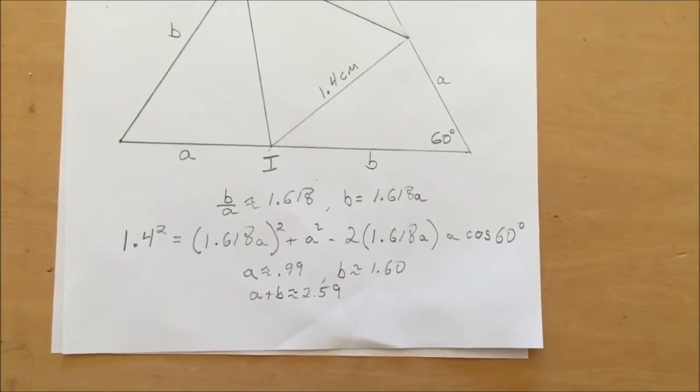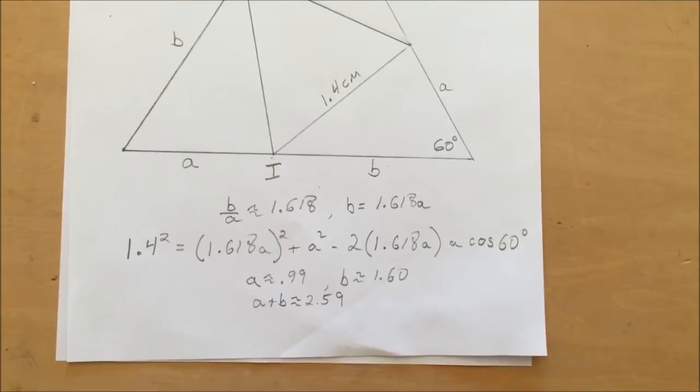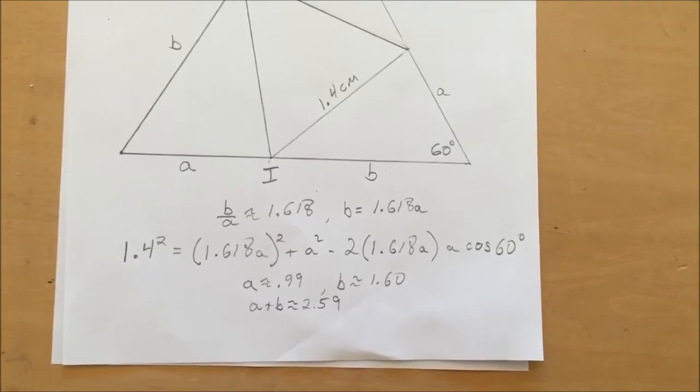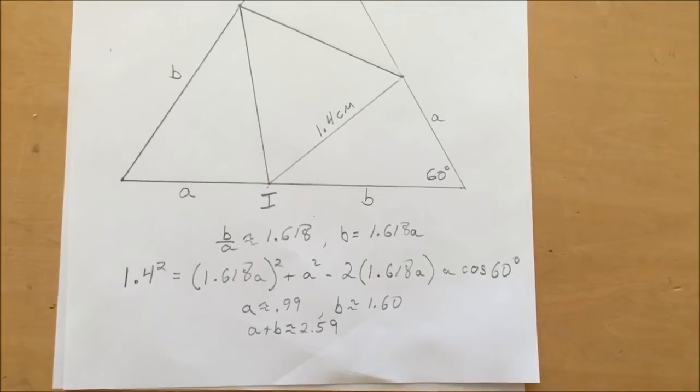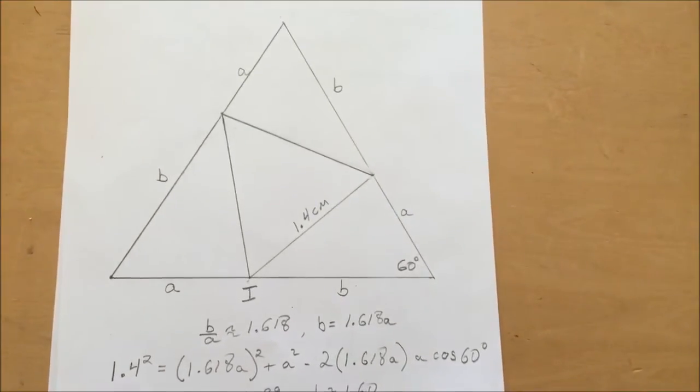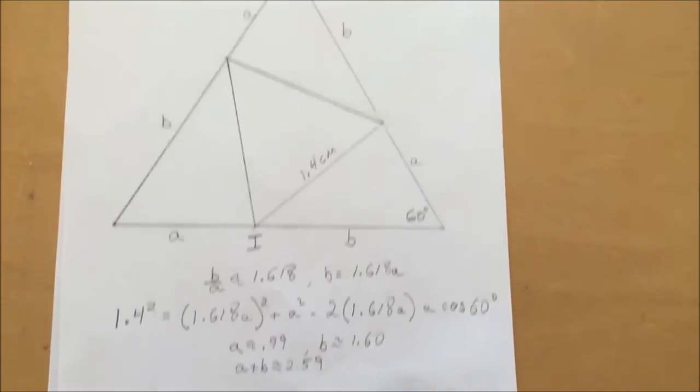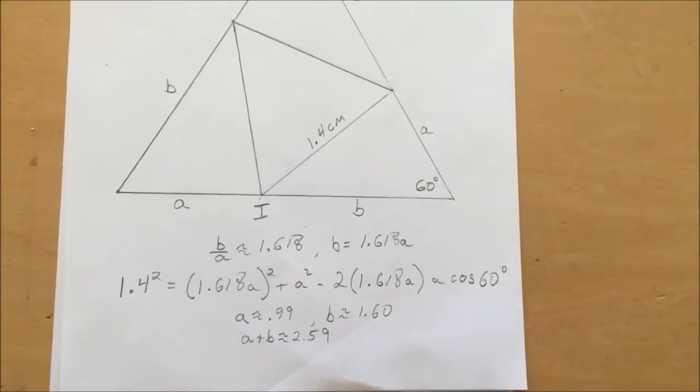Solving the equation, we get A is approximately equal to 0.99. B is approximately equal to 1.60. So A plus B, the length of the sides of the outer triangle, the octahedron, is approximately 2.59.